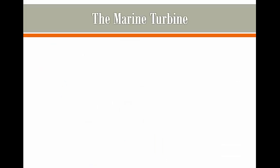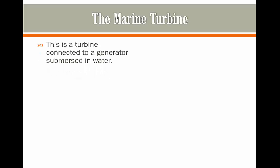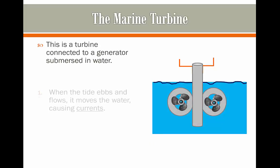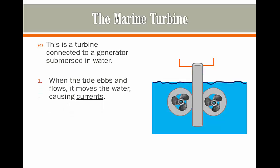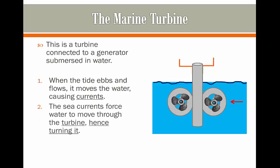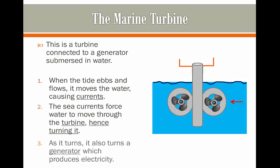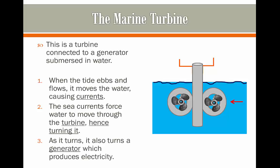The other way to produce electricity from tidal energy is using the marine turbine. This is a turbine connected to a generator submerged in water. When the tide ebbs and flows, it moves the water and this causes currents. These currents force their way through the turbine, spinning it, and as a result — since it's connected to a generator — it produces electricity.